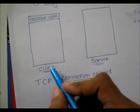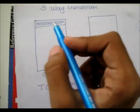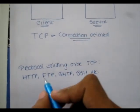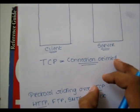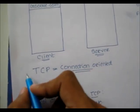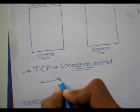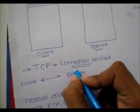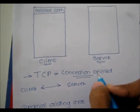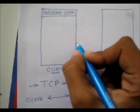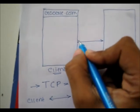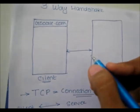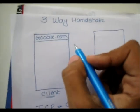Suppose this is a client and this is a server. In the client machine I am running a browser and I am trying to open google.com. Since HTTP runs over TCP, it needs to follow TCP rules, and one of the most important rules is that before any data transfer can occur between a server and a client, there needs to be a reliable connection already established. So in order to establish that connection, we need a three-way handshake.